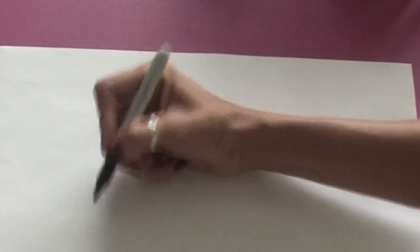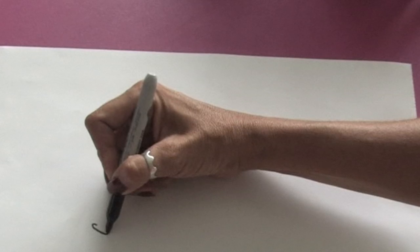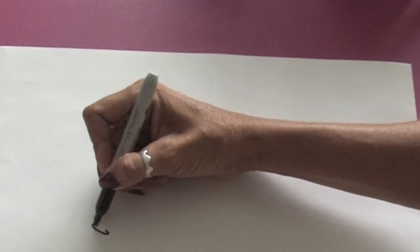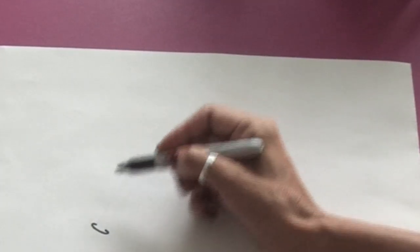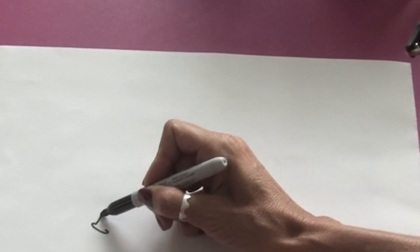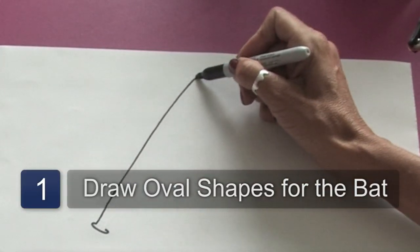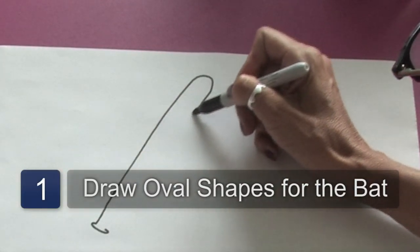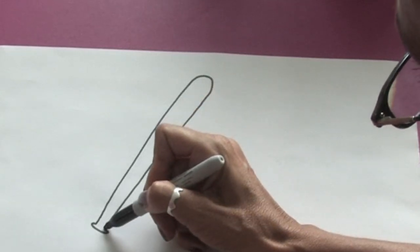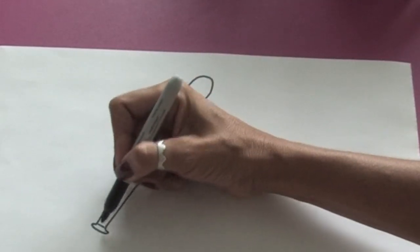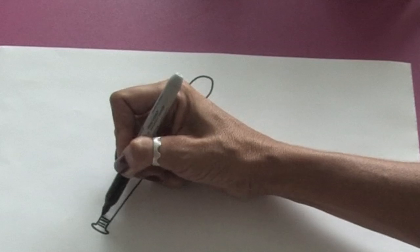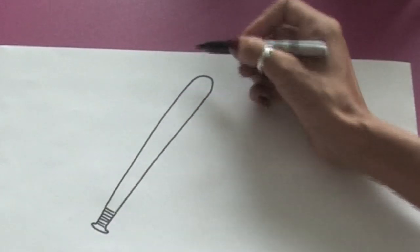To draw sports equipment, we're going to start off by doing a baseball bat, which is going to be very simple. We're just going to do a little oval shape here for the bottom of the bat. Then we're going to draw a long line coming up and then it rounds at the top and down. And see, just with a few basic lines, you get your bat in.